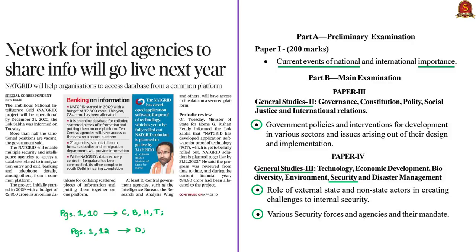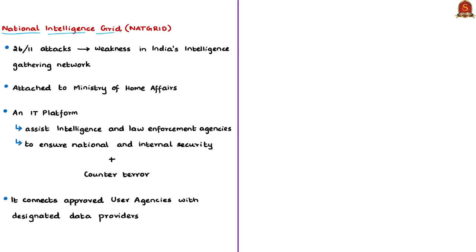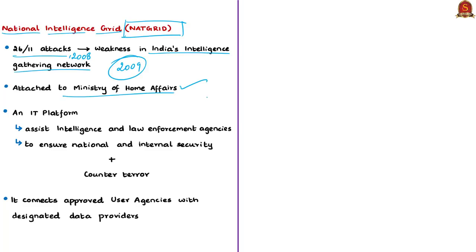This discussion is based on the National Intelligence Grid. The news article talks about the recent development in establishing the National Intelligence Grid. The 26/11 Mumbai terror attacks in 2008 were one of the worst terror attacks witnessed by independent India. This attack exposed the weaknesses in India's intelligence gathering networks, and as a solution, the project of NATGRID was begun in 2009. NATGRID is attached to the Ministry of Home Affairs and has been created as an IT platform to assist intelligence and law enforcement agencies in ensuring national security and internal security. Its ultimate aim is to counter terror and terror activities.